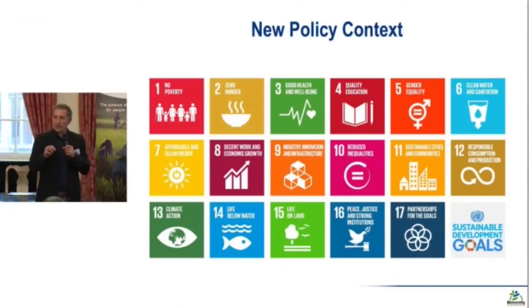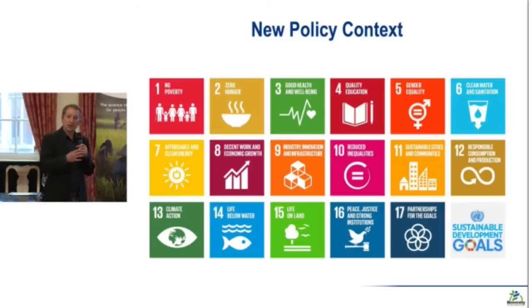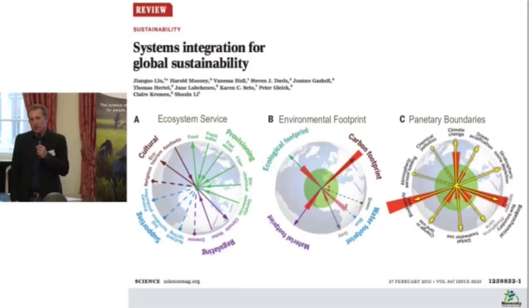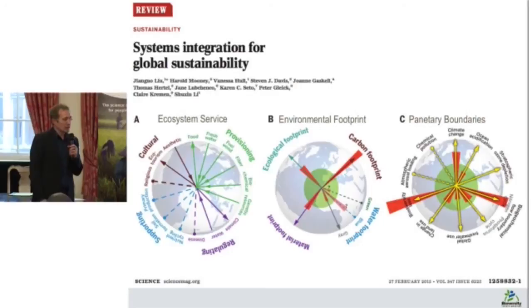Looking at the SDGs provides a tremendous opportunity to reflect on the role of ecosystem services in addressing global goals. There is a recognized need for integrated approaches that link different goals and highlight how interventions targeting one goal might influence others. This is particularly relevant for ecosystem service-based approaches, which shift the framing from viewing environment as a specific goal to asking what role the environment plays in achieving goals around hunger, disease, energy, and health. One key paper by Jac Liu with Hal Mooney and others calls for a systems-based approach in global sustainability.